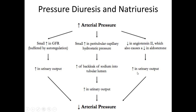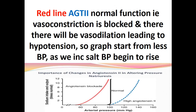Another mechanism: whenever arterial pressure is elevated, there is a decrease in angiotensin level, which also causes a decrease in aldosterone. This increases urinary output. A graph showing this has three lines: a red line, a black line, and a blue dotted line.